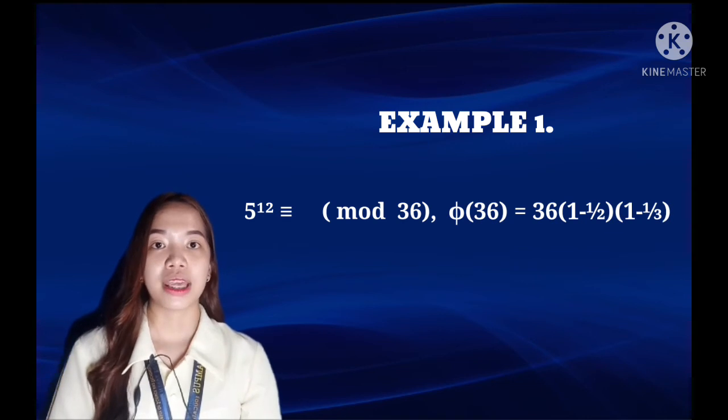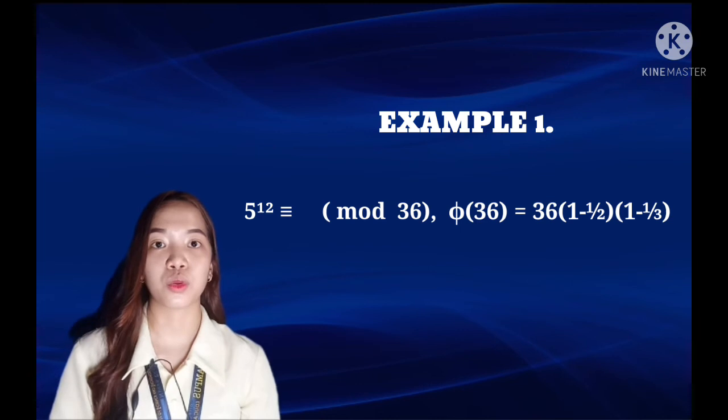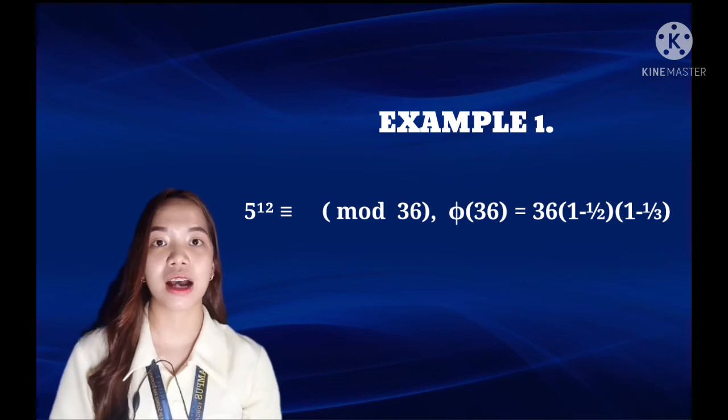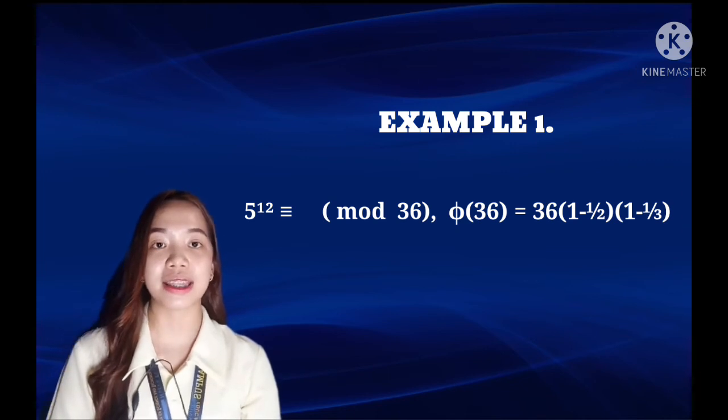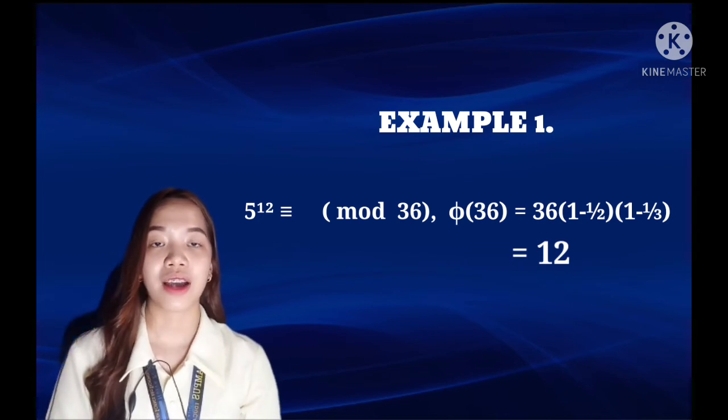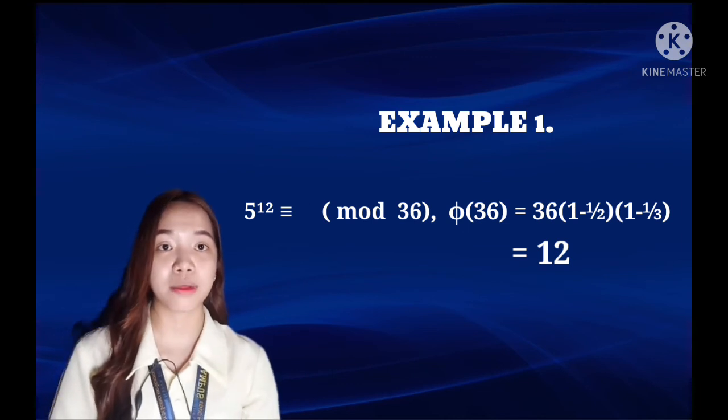So it's equal to the original number times (1 minus the reciprocal of all the prime factors). So 2 and 3 are the only prime factors in this case. You can check that this is indeed 12. So we have 5 to the φ(36) and 5 and 36 are coprime, so that gives us 1 immediately.